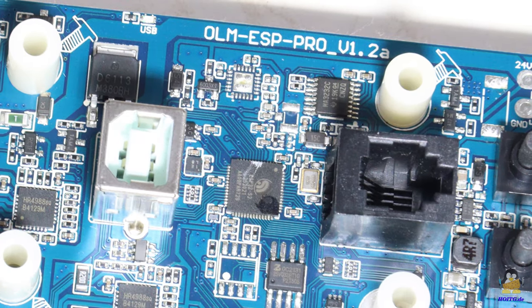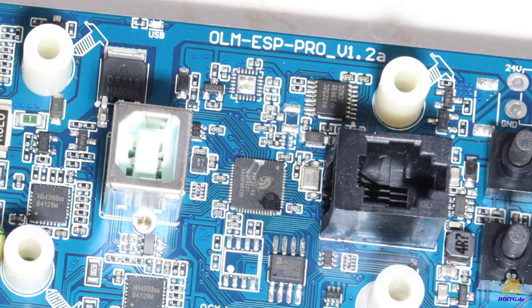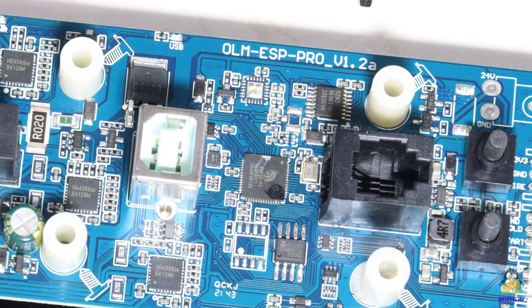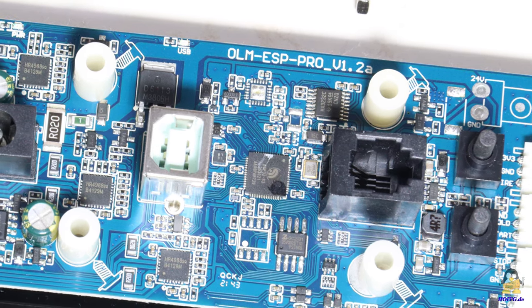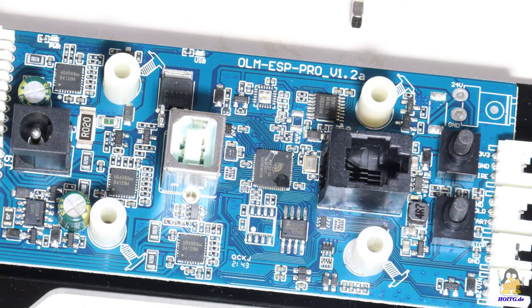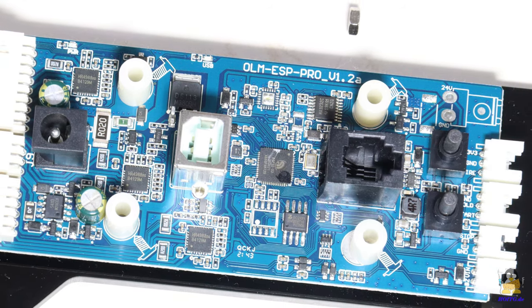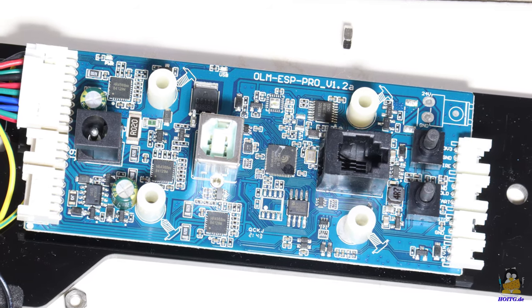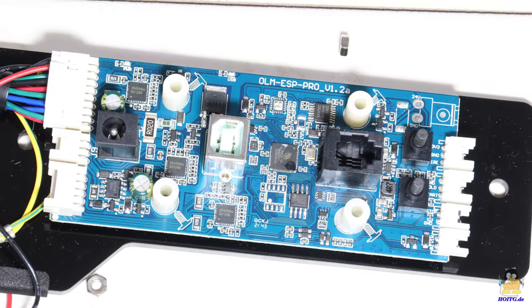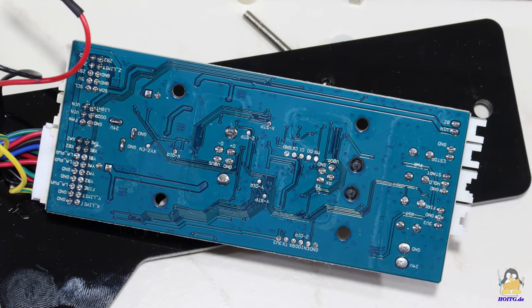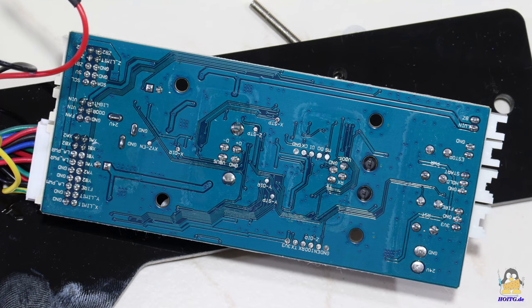A microprocessor type ESP32 is placed on the mainboard, running the firmware Grbl. A socket for the power supply, the USB socket for data transmission and a socket for an offline controller are the interfaces to the world outside. A power button and a second button for resetting the firmware can be seen on the right. The front and back of the circuit board are labeled perfectly.